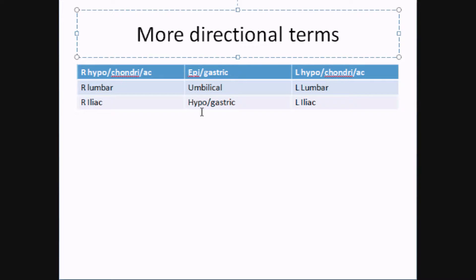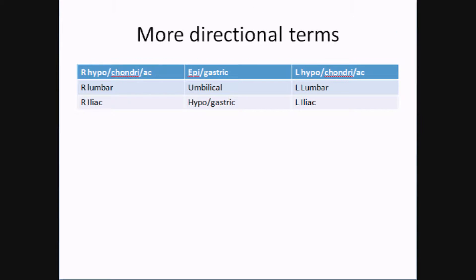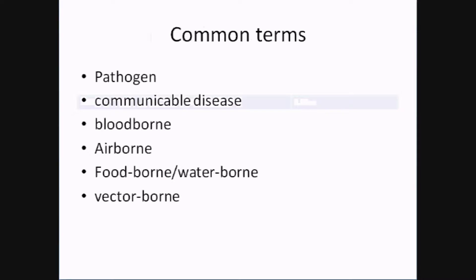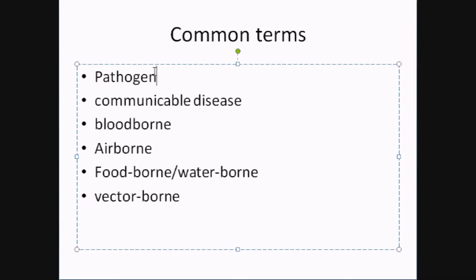Right below your stomach would be the hypogastric region — epigastric is above, hypogastric is below. Left iliac is on the lower left. You can also divide the body by quadrants. Let's move on, as we don't want to take as long as last time.